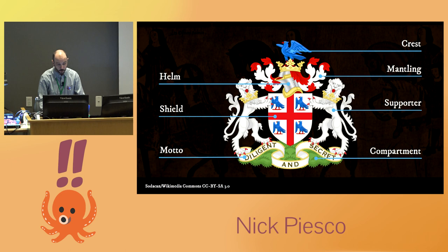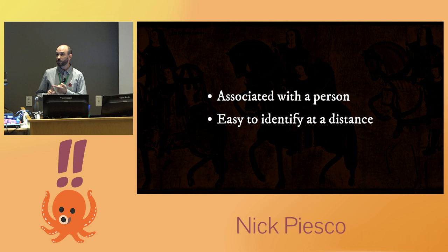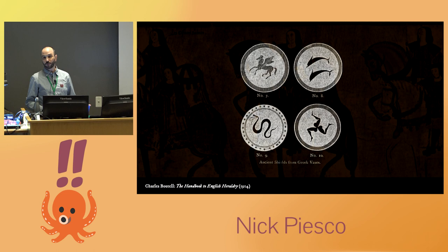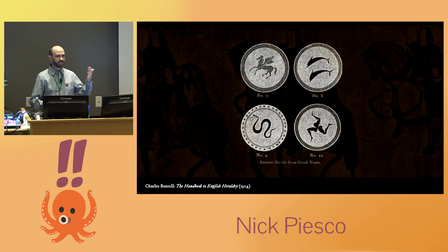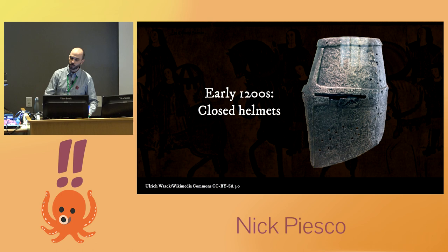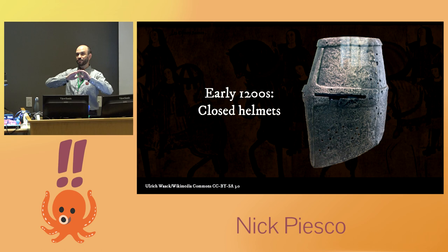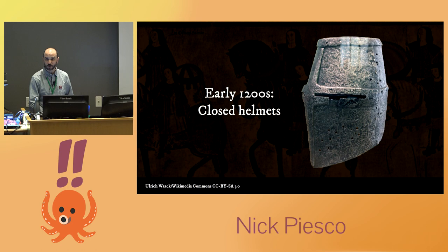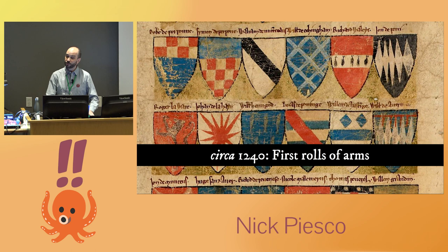Arms have two main qualities: they're associated with the person, and they're easy to identify at a distance. People have been decorating things since time immemorial. Ancient Greek soldiers decorated the shields they carried into battle — some of them look kind of heraldic, but they're not personally identifiable. It's more like a t-shirt or a pair of earrings, something you saw that looked cool, not something that identifies you as you. We don't really see that one-to-one relationship until the early 1200s, thanks to closed-faced helmets. You've got a bunch of people in coats of armor and you can't see their faces — if they can use a different shield every day, how are you really going to know who's who? So heralds — hence the term heraldry — were the people in charge of organizing tournaments, and it was only natural that they'd keep track of who bears what arms. We start seeing the first rolls of arms around 1240.